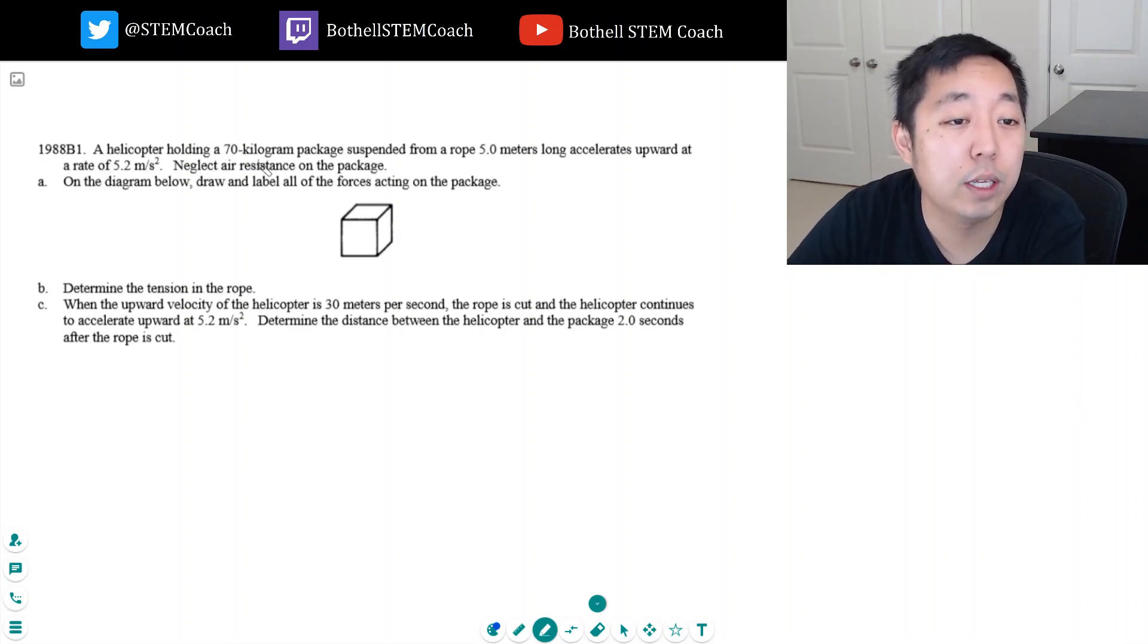A helicopter holding a 70 kilogram package suspended from a rope 5.0 meters long accelerates upward at a rate of 5.2 meters per second squared. On the diagram below, draw all the forces acting on the package.